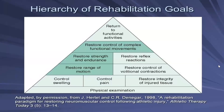Here we can see the hierarchy of rehabilitation goals. The major goals are: physical examination, control of swelling, control of pain, restore range of motion, restore muscle contractions, restore strength and endurance, restore reflexes, restore control and complex functional movement, and then return to functional activity.